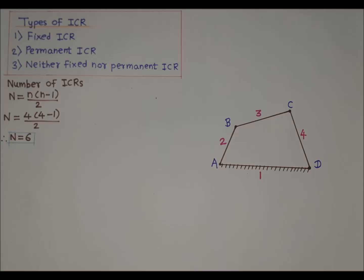As there are four links, the number of ICRs N equals four times (four minus one) divided by two, which equals six. Therefore N equals six, hence the number of ICRs will be six.